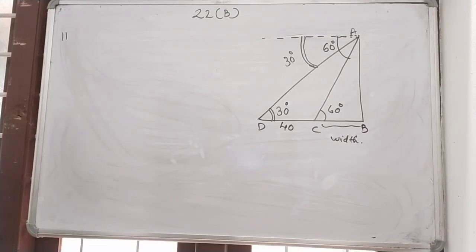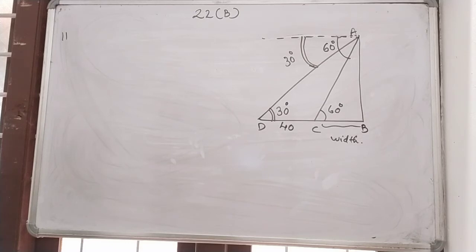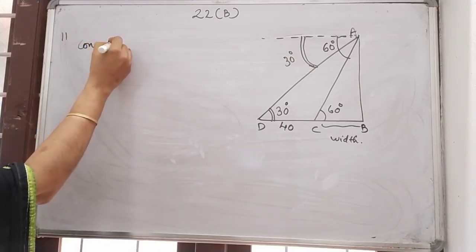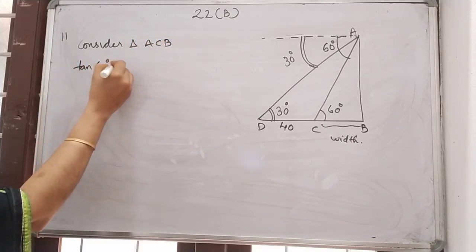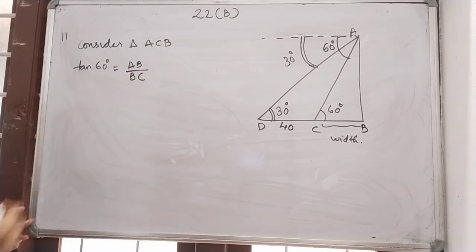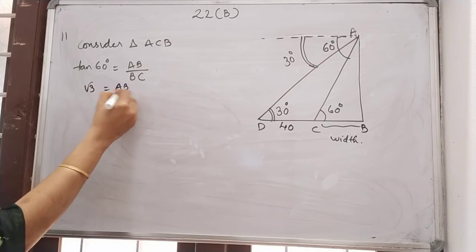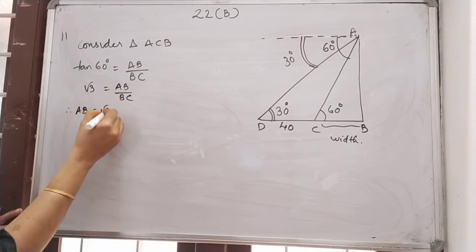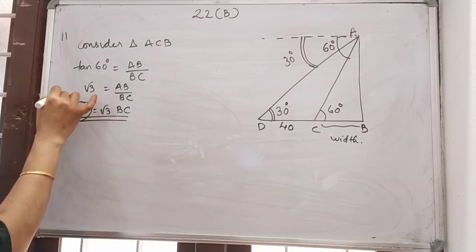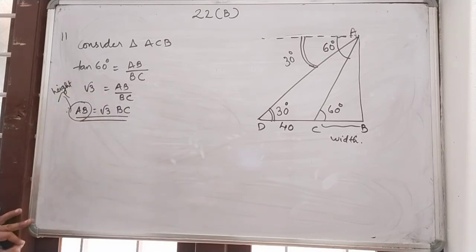The same concept we can apply here. Let BC be the width of the river and AB be the height of the tree. The angle at C is 60 degrees. When he moves away 40 meters, the angle changes to 30 degrees. First consider triangle ACB. Tan 60 equals AB divided by BC. So root 3 equals AB divided by BC, therefore AB equals root 3 BC. That is equation number 1.